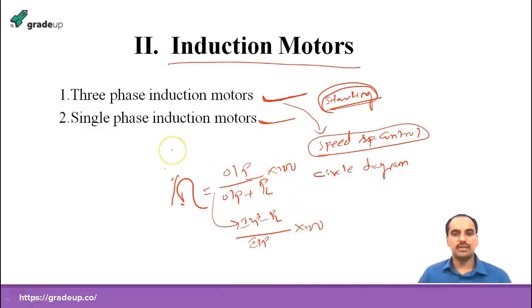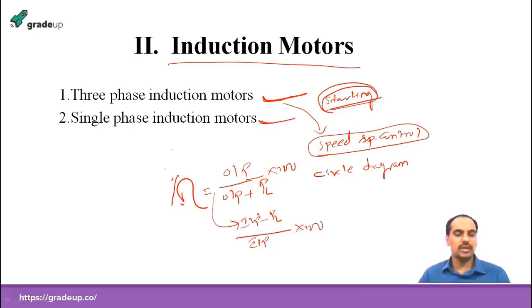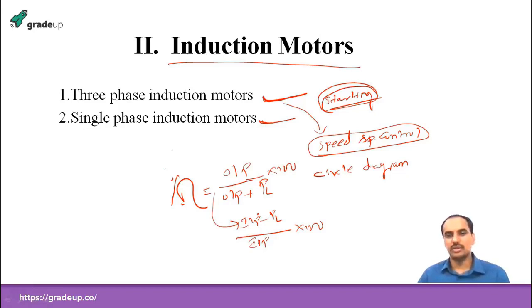Based on the circle diagram, we have to calculate whatever we draw — measure each line, each quantity like power output and mechanical power over that machine. Based on that we can find the required parameters.